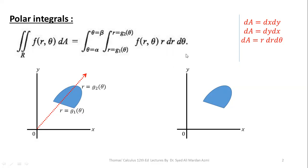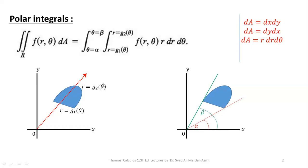In order to calculate the limits of the outer variable theta, we calculate the starting angle and the ending angle of the region in the counterclockwise direction with the positive x-axis. In this example, the starting angle of the region is alpha and the ending angle is beta. So the limits of theta are alpha to beta.